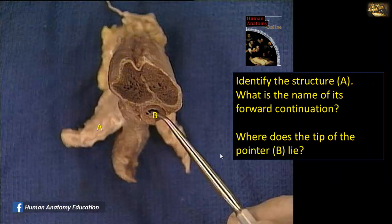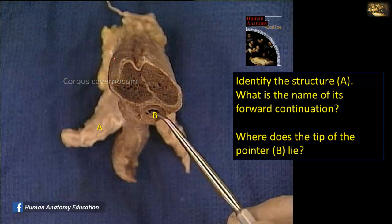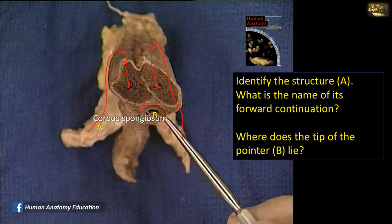Identify structure A — what is the name of its forward continuation? And where does the tip of pointer B lie? This is a section of the penis. You can see the corpus cavernosum and another corpus cavernosum. The backward continuation of the corpus cavernosum is the crus. Here is the crus of the penis that continues forward into the body of the penis as the corpus cavernosum. So A is the crus, and this region is the corpus cavernosum, and it contains the penile urethra.